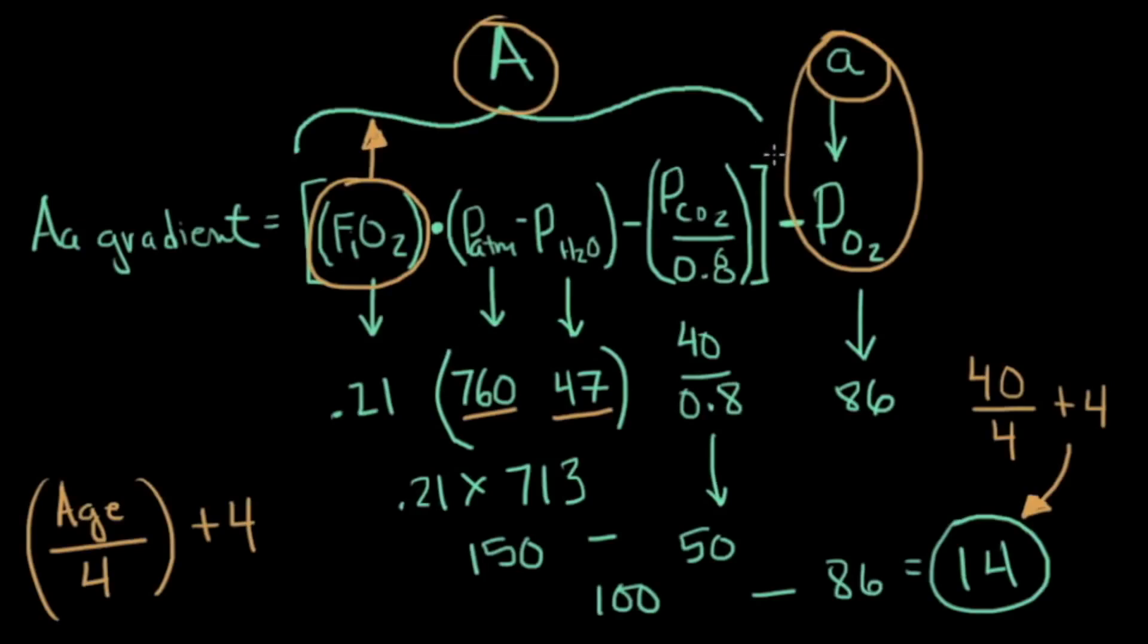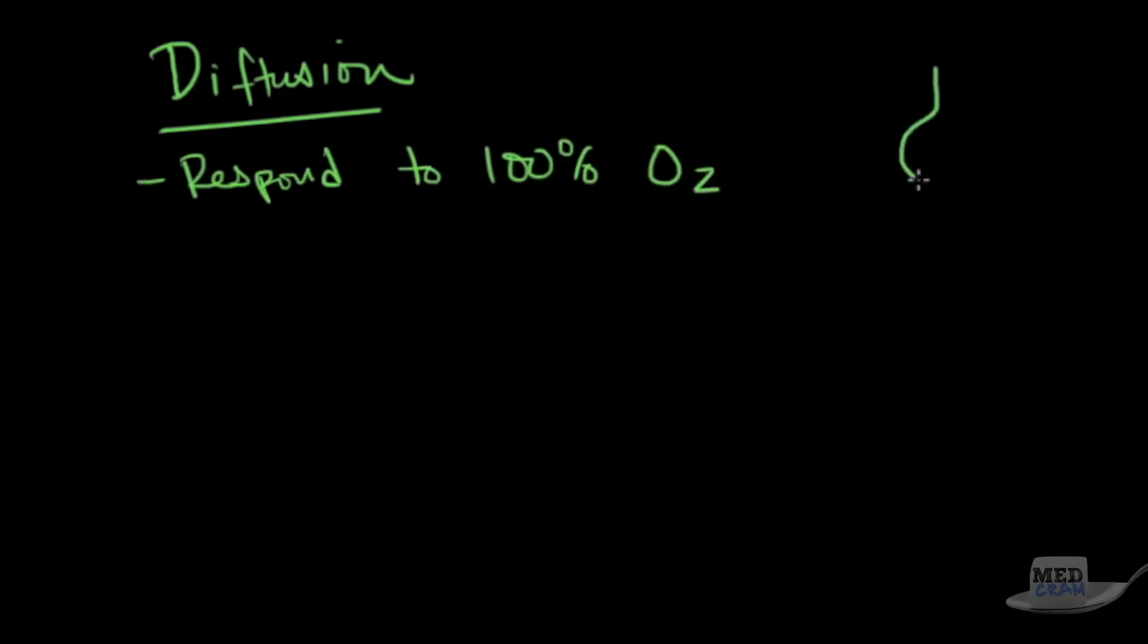Let's review. If we look at diffusion, a couple of key points you need to know. First of all, it does respond to 100% oxygen. Again, if we look at our alveolus and we've got our pulmonary artery and our pulmonary vein, if there's a barrier here, just giving more oxygen will help push it through and get the O2 in the pulmonary vein to come up.